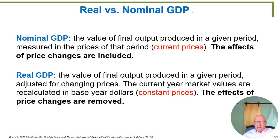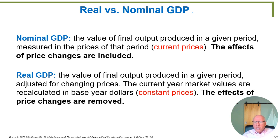So now what's real GDP? We're going to take the final value of the final output produced in a given period — so far it sounds the same — but now we're going to adjust for changing prices. The current year market values are recalculated in what are called base year dollars, also known as constant dollars. This has the effect of removing all price changes. Whenever we see changes in our calculated GDP, the only thing that comes into the data will be how many actual physical items are made. Whenever we use the word 'real' in economics, we've adjusted the data to take inflation out by using a constant price.